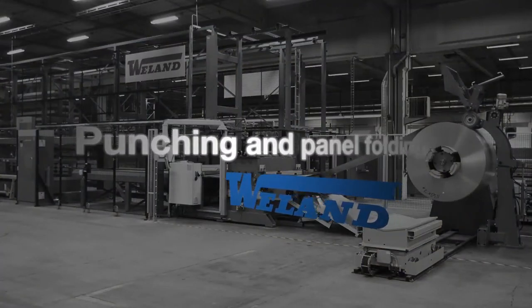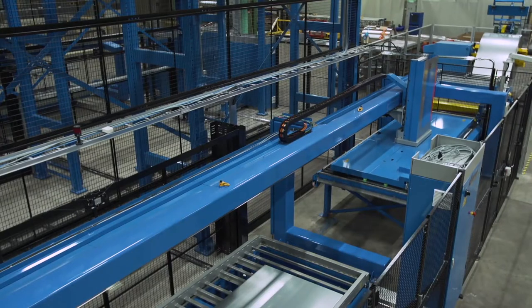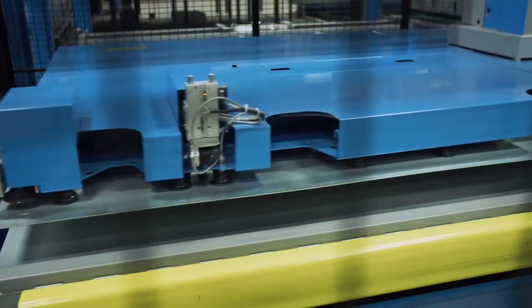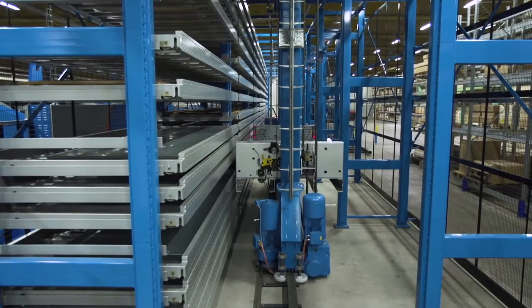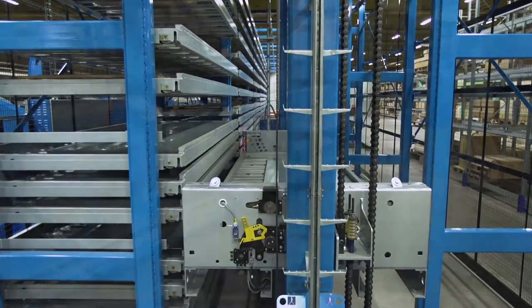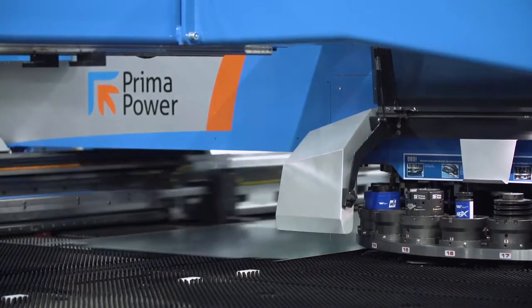Punching and panel folding. We have automatic punching facilities that perform punching, nibbling, and panel folding in one sequence. The sheets that are to be machined are fetched automatically from the Hi-Rise store and go on to the punch and nibbling machine. This has 45 different tools and works exceptionally quickly.